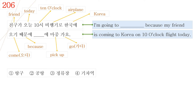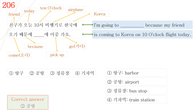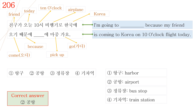Let's see the answer words. No. 1 is 항구, it means harbor. No. 2 is 공항, it means airport. No. 3 is 정류장, it means bus stop. No. 4 is 기차역, it means train station. So the correct answer is No. 2, 공항. Let's read it again: 친구가 오늘 10시 비행기로 한국에 오기 때문에 공항에 마중가요. Because my friend is coming to Korea on a 10 o'clock flight today, I'm going to the airport to pick them up.